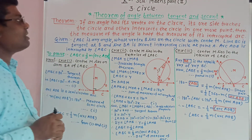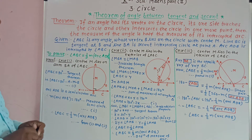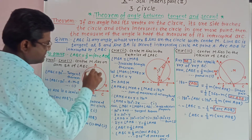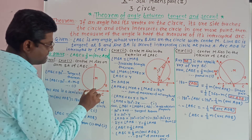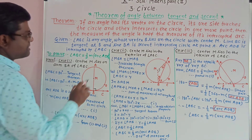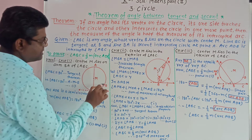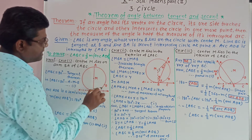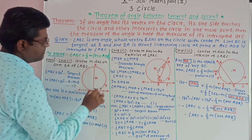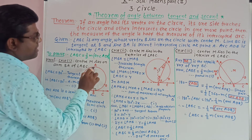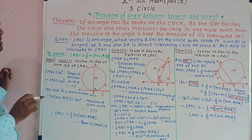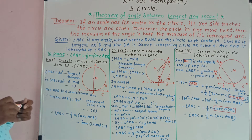Thus, the theorem of angle between tangent and secant is proved. The angle between the tangent and secant — this angle ABC — is equal to half of the major of arc ADB. This is called the theorem of angle between tangent and secant.